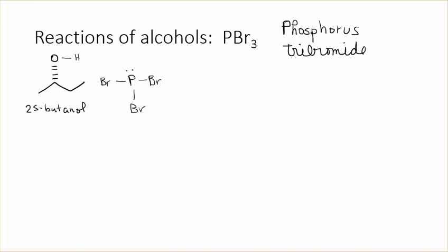So what happens here in this first step is the alcohol attacks the phosphorus and in attacking the phosphorus it pushes the bromide away. This is kind of like an SN2 type reaction. After that reaction occurs the products look like this. So this chiral center hasn't been touched yet. We have OH-PBr2. This has a positive charge on it now and we also have the Br- floating around.